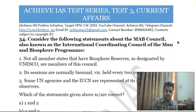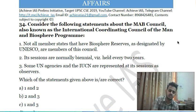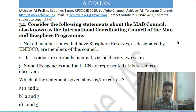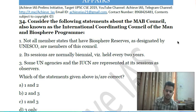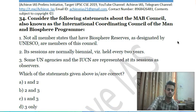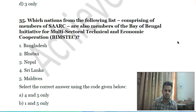Thirty-third question: consider the following statements about the Man and Biosphere Council, also known as the International Coordinating Council of the Man and Biosphere Programme — first, not all member states that have biosphere reserves designated by UNESCO are members of this council; second, its sessions are normally biennial, that is, held every two years; third, some UN agencies and IUCN are represented at its sessions as observers. Choose the correct answer.